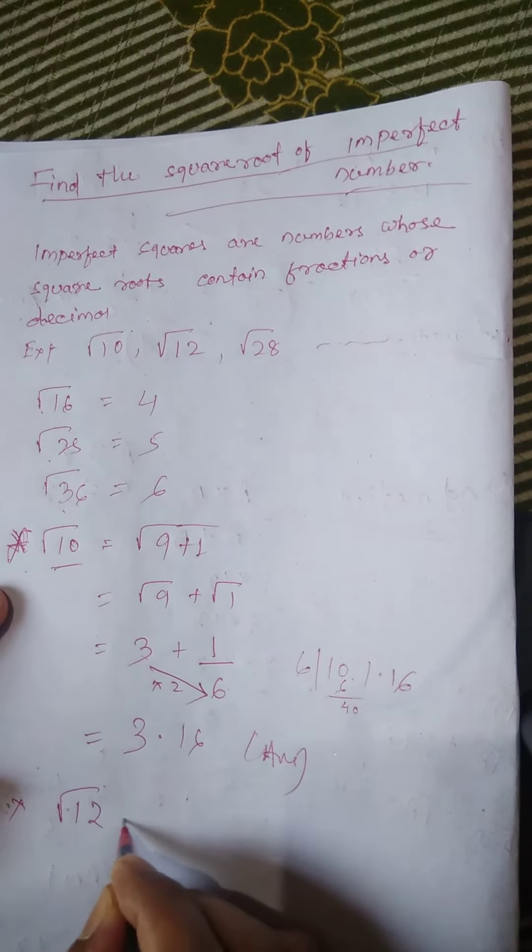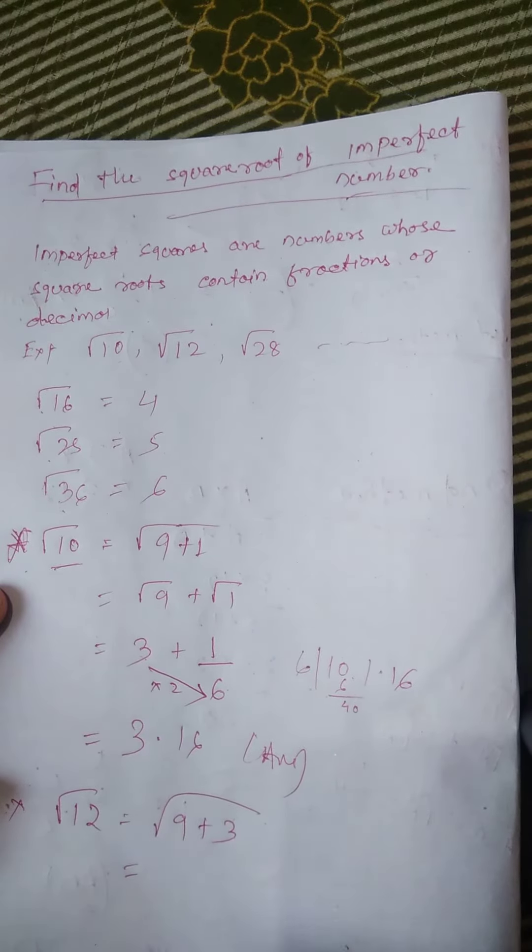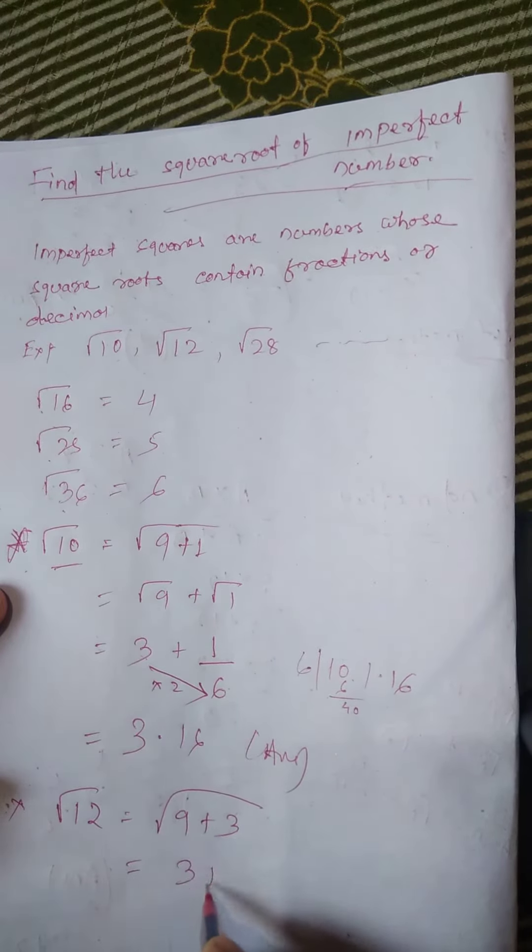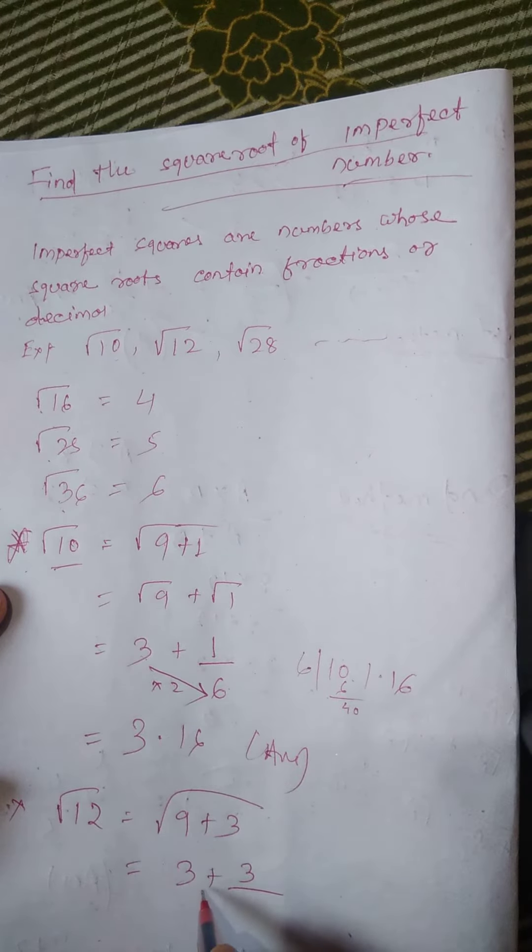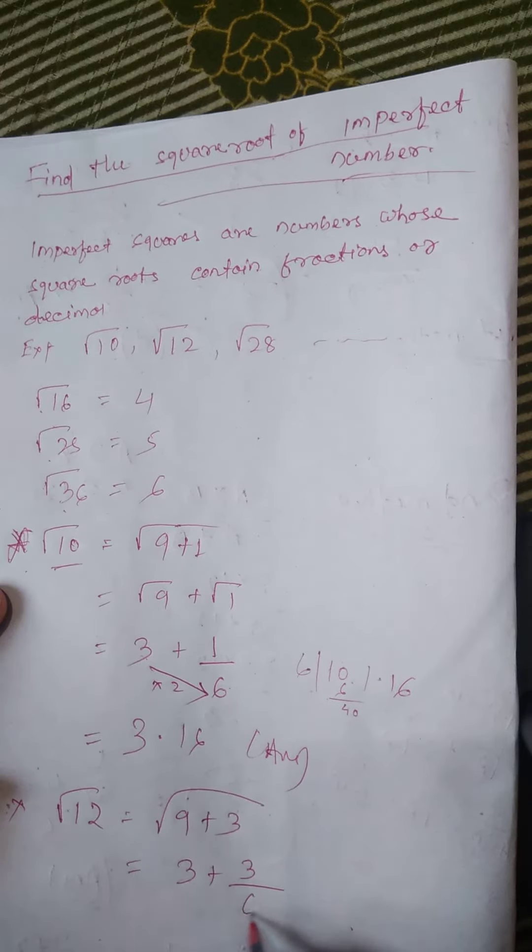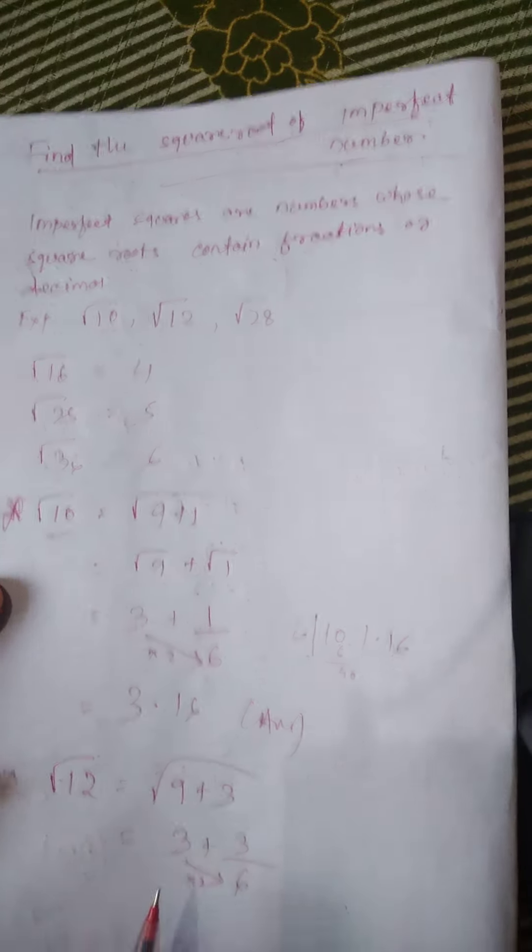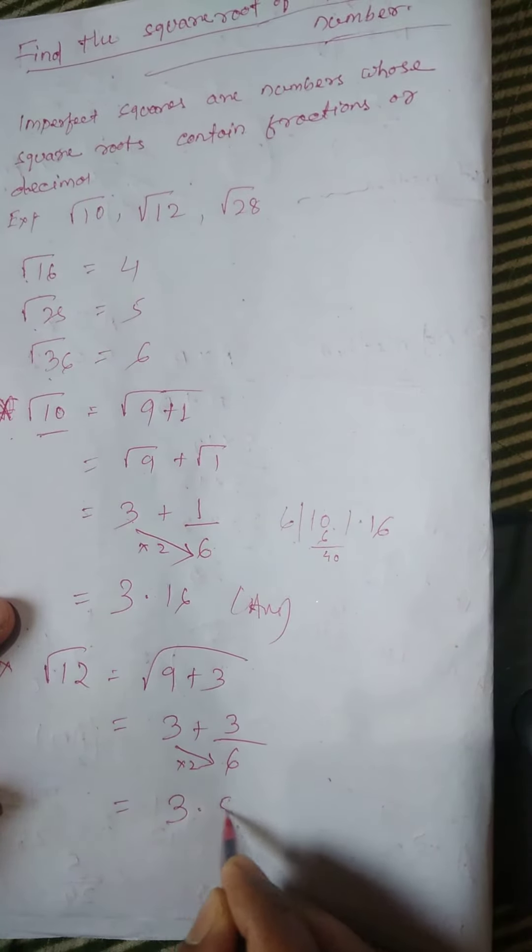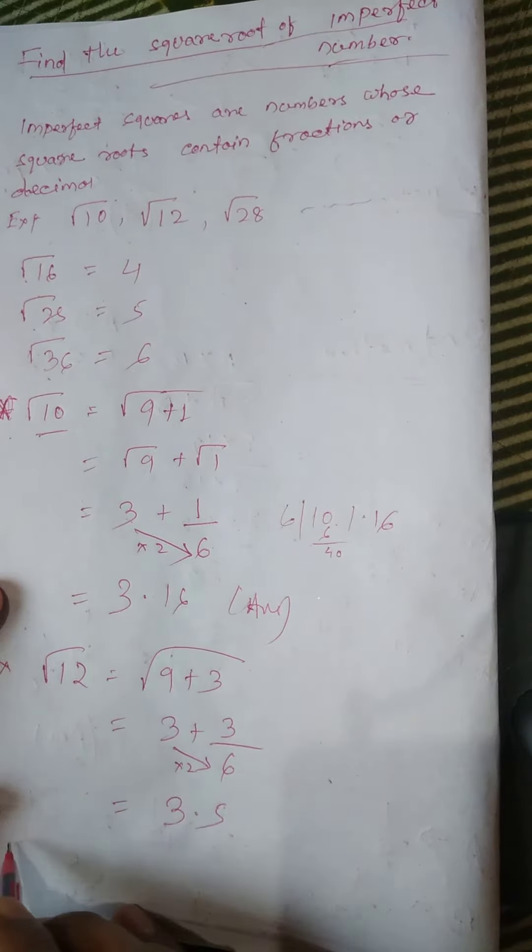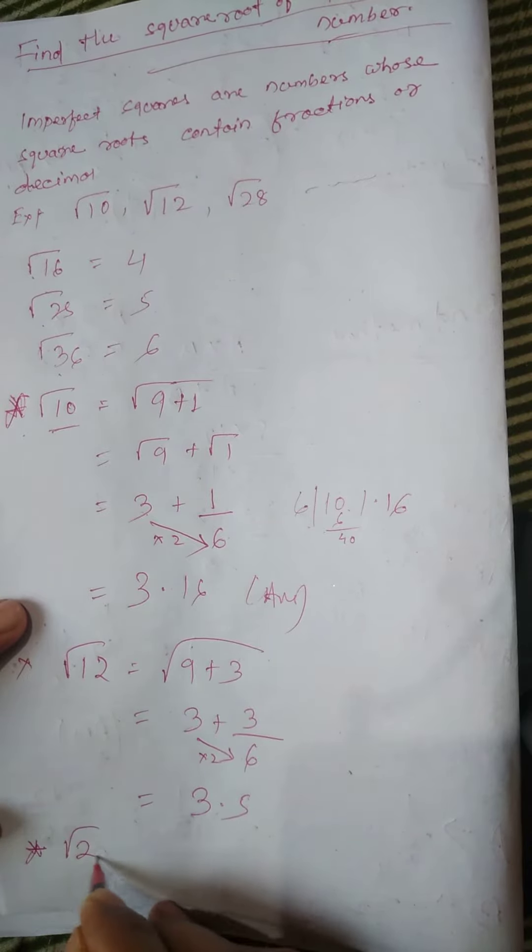Root 12 value: 9 plus 3, root over 3. 3 divided by 3 to the 6. Value 10 minus 3.5. Root root 2 questions.